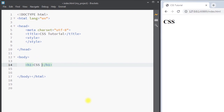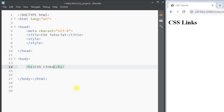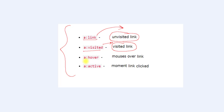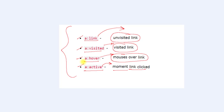In this video we're going to talk about CSS links — how we can style links in our webpage using CSS. A link has four different states: colon link, which refers to the unvisited state; colon visited, which refers to the state where the link has been visited by a user; colon hover, which refers to when we put our mouse over the link; and colon active, which refers to when we click on a link using our mouse.